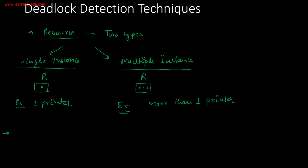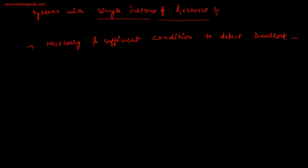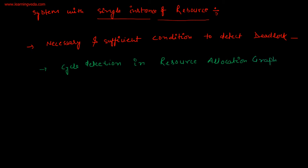We will categorize our detection techniques in two types. First, if your system is having a resource with single instance, then what will be the necessary and sufficient condition to detect deadlock? The detection technique name is cycle detection in resource allocation graph. I have discussed resource allocation graph in the first lecture.